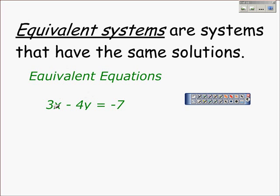Equivalent systems are systems that have the same solutions. To understand equivalent systems, it's important to understand equivalent equations. If we take the given equation 3x minus 4y equals negative 7, and multiply that entire equation by, let's say 2. 2 times 3x is 6x, 2 times minus 4y is minus 8y.